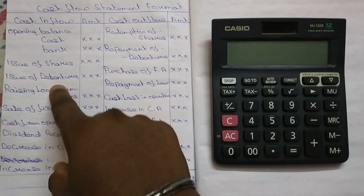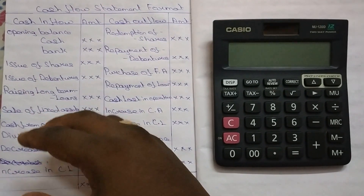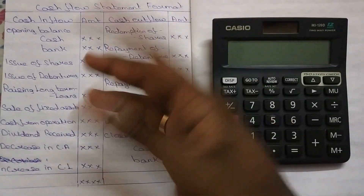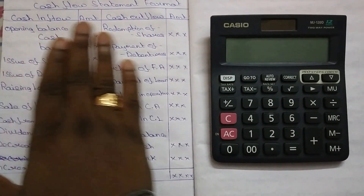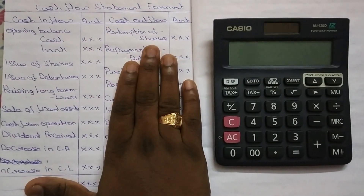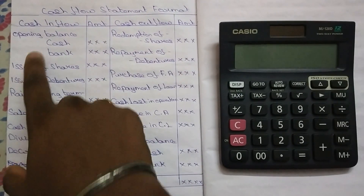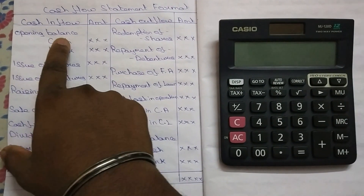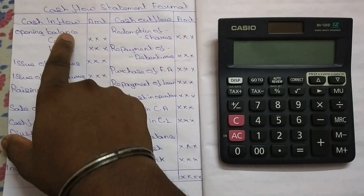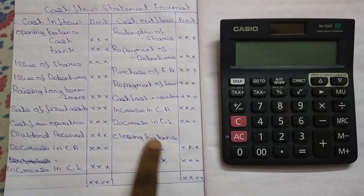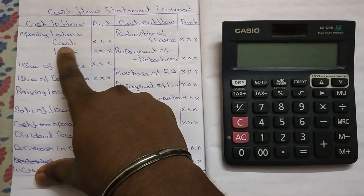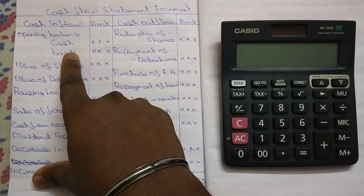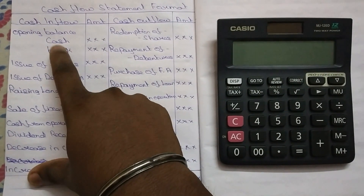You can see it as cash inflow. If you enter the cash out of cash, you can decide it as a side. This will be opening balance and closing balance. You can see it as cash and bank.